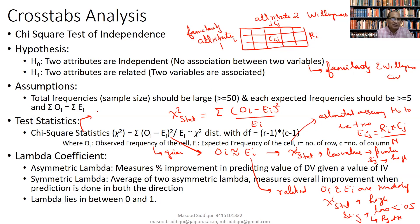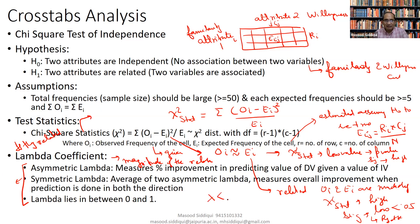The objective of the chi-square statistic is to examine whether two attributes are independent or related. If they turn out to be related, we are interested in knowing the magnitude of the relationship using lambda. The value of lambda lies between 0 and 1. Values near 0 indicate a weak relationship with low predictive accuracy, while values near 1 indicate a strong relationship with high predictive accuracy.